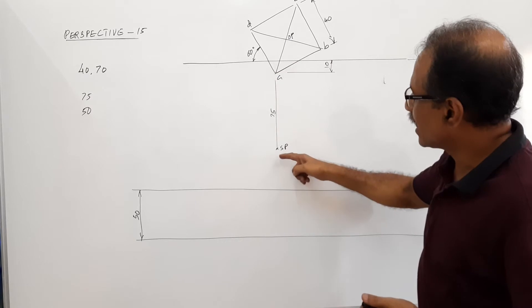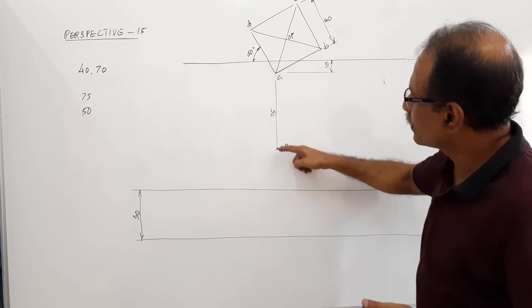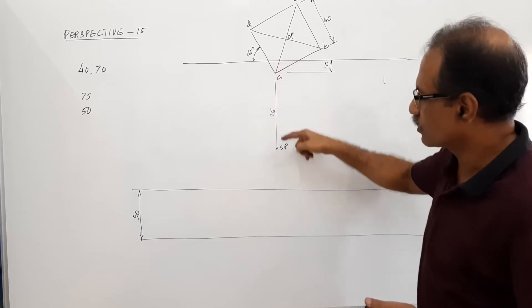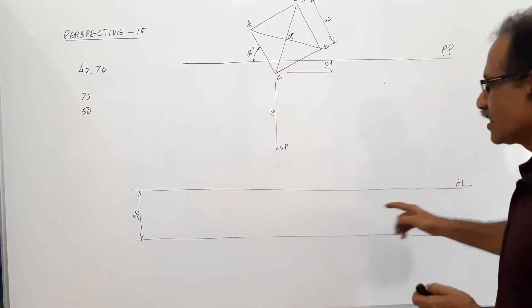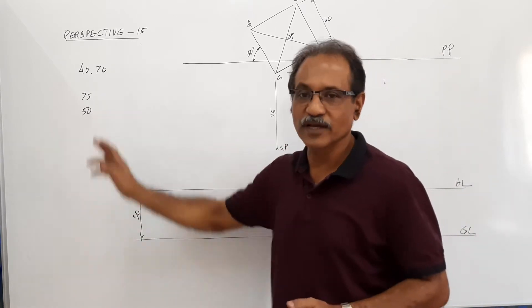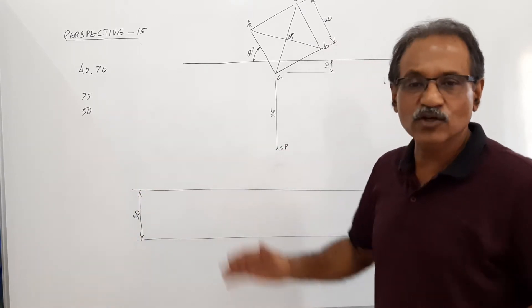Then through A, draw a line. And from BP, measure 75 mm to locate the station point. Not from A, but from BP. Then draw HL and GL. The height of HL and GL is 50 mm. The height of the station point is 50 mm. This is the initial drawing.